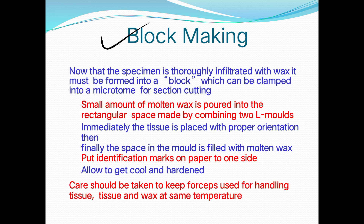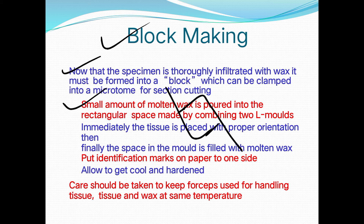For block making: once the specimen is thoroughly infiltrated with wax, it must be formed into a block that can be clamped into a microtome. A small amount of molten wax is poured into the rectangular space made by combining two L-shaped molds. The molten paraffin is poured to approximately 5 mm depth.